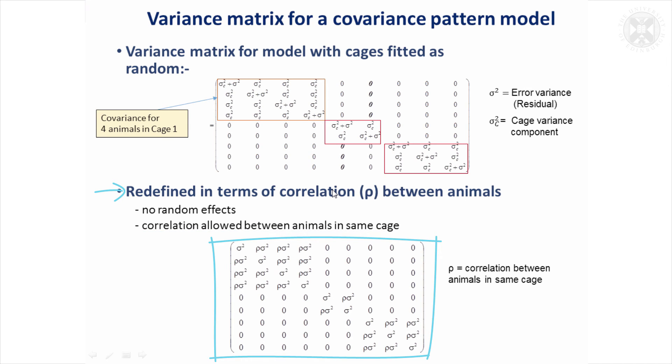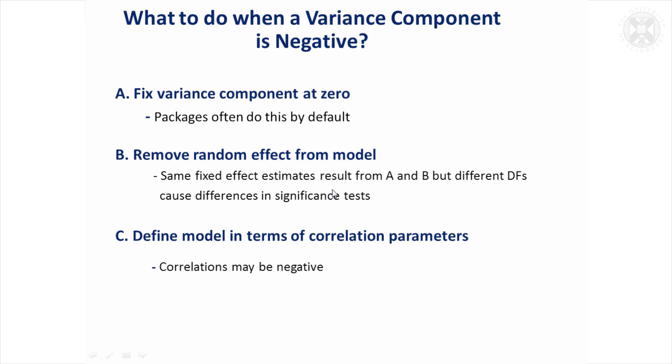And yeah, all these zeros are still there. They're saying there's no correlation between animals that are in different cages. You will quite often find in your analyses that you get variance components of zero, and that's why it's because it's trying to estimate something negative, but it's fixed it at zero, so it's nothing to worry about unless you think there is actually negative correlation.